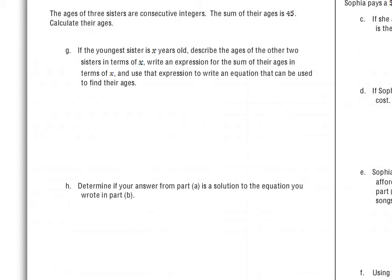This is the type of problem that's really thinking about: are we preparing you for college? If you can get this problem right, you will do much better on the test that helps colleges determine where you should be placed. The ages of three sisters are consecutive integers — for instance like 2, 3, 4 or 4, 5, 6 — and the sum of their ages is 45. The youngest sister is x years old; describe the ages of the other two sisters in terms of x.